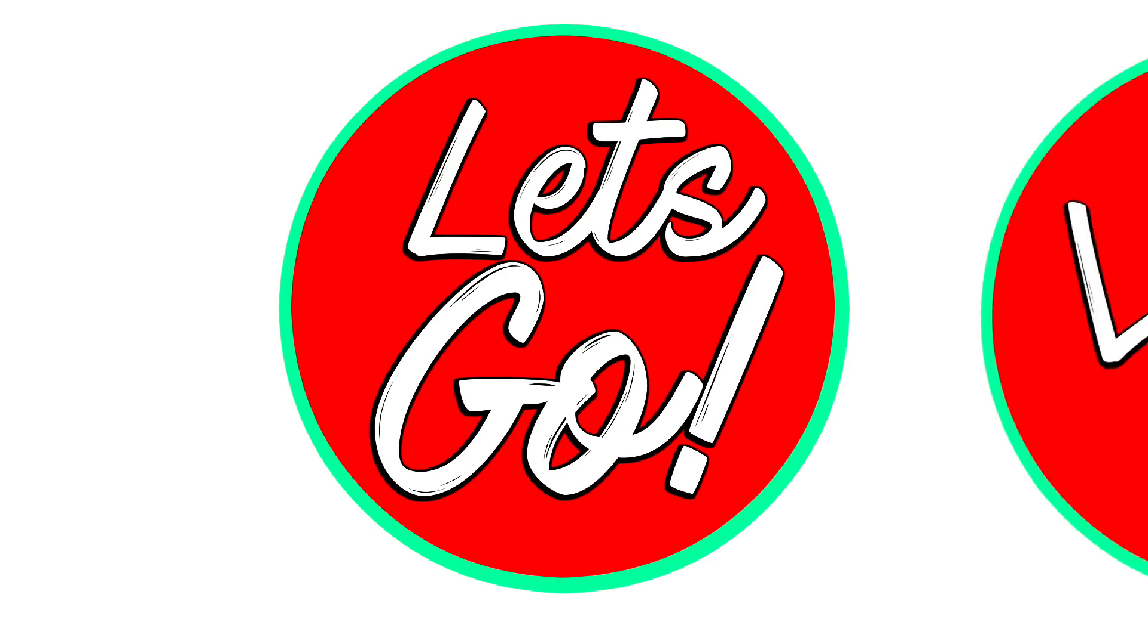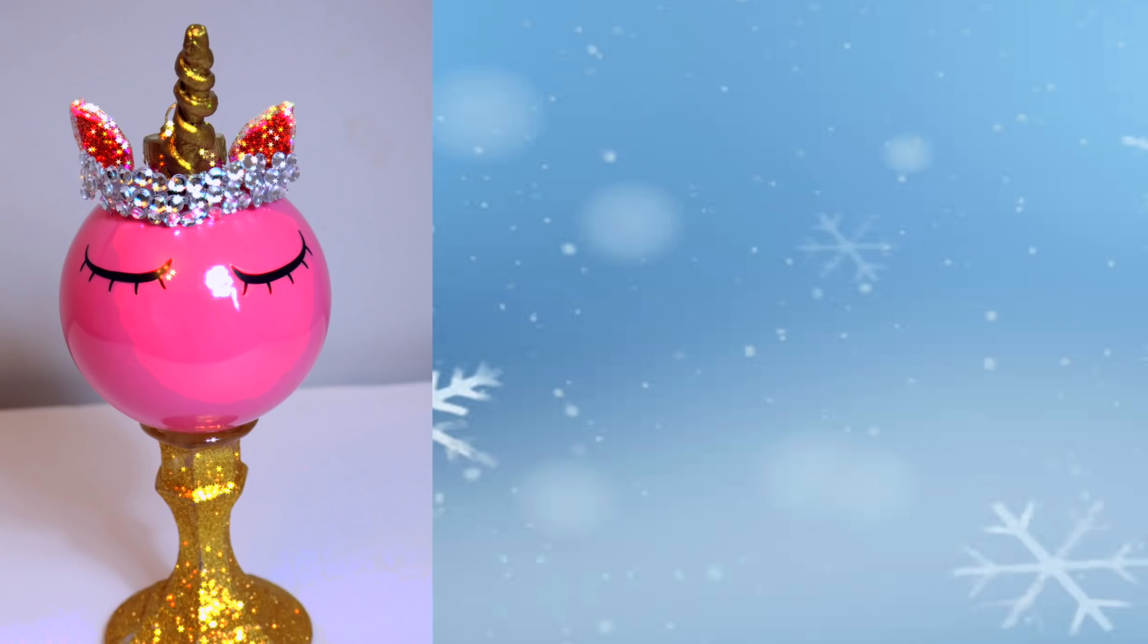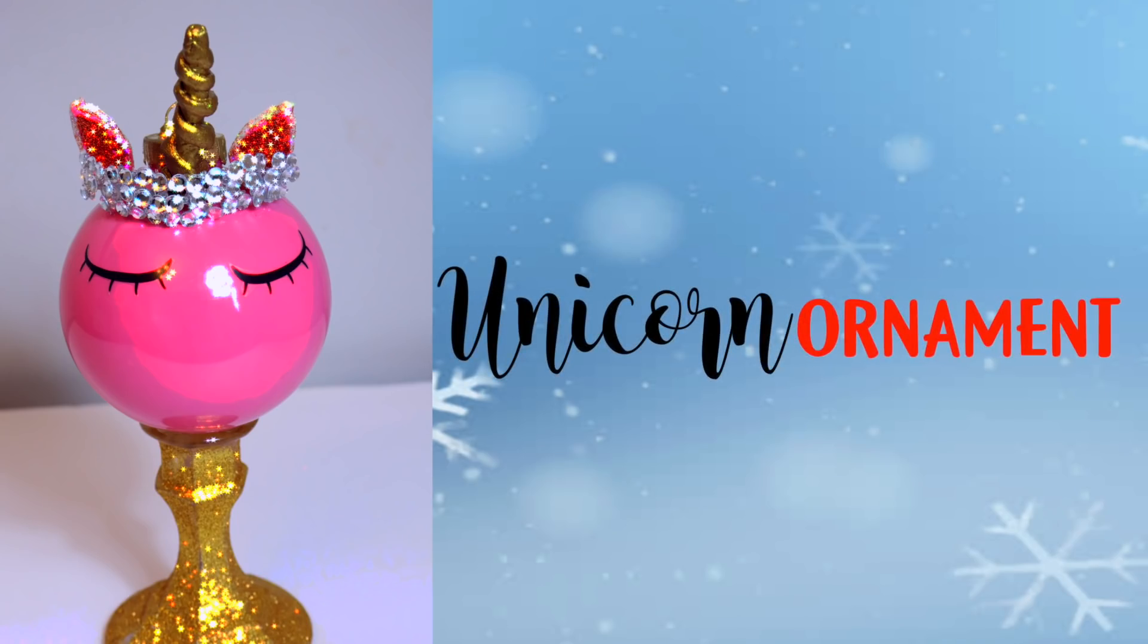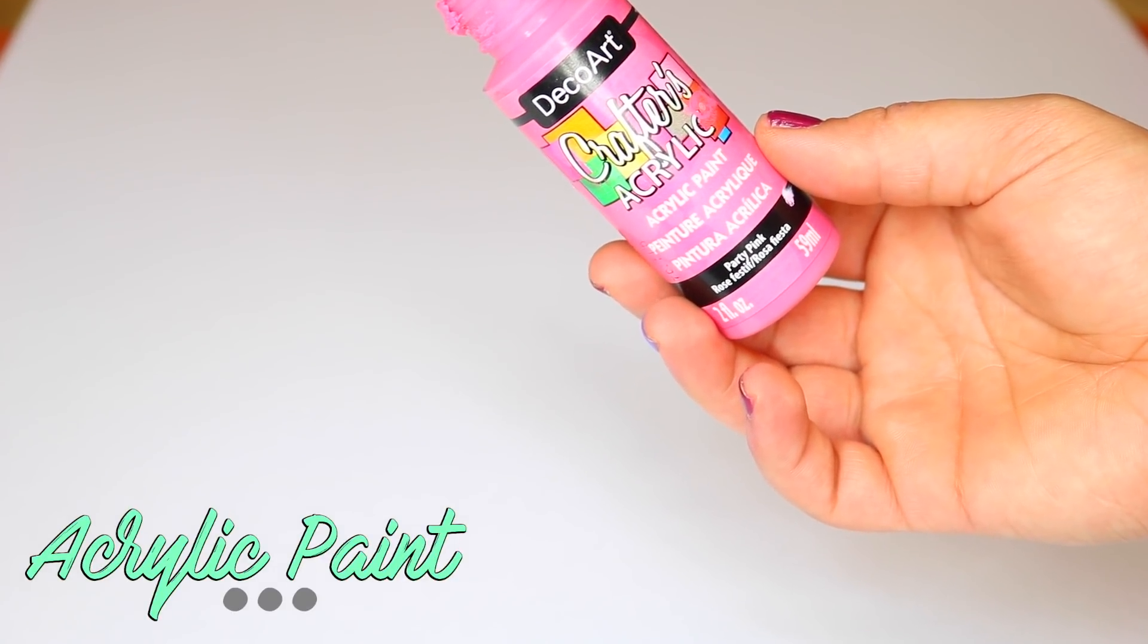So the first DIY is this unicorn and I just am in love with her. I think she's so cute and girly. We're going to start with pink paint, and I'm going to be using just regular acrylic paint. You could also use glitter, whatever you have on hand, inside of one of the large clear ornaments.